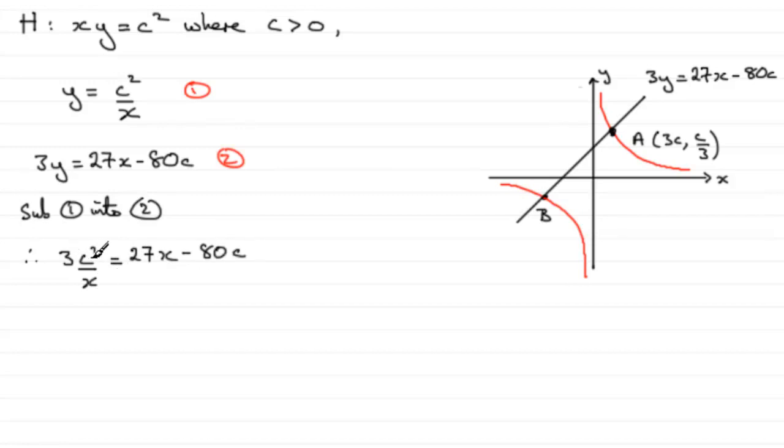And if we multiply throughout by X to remove this X here, we therefore have 3C squared equals 27X squared minus 80CX.